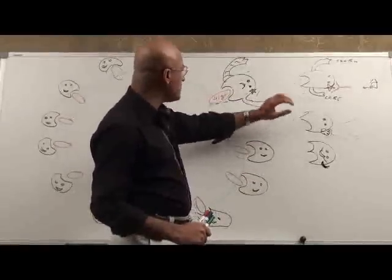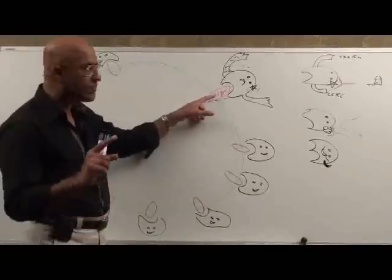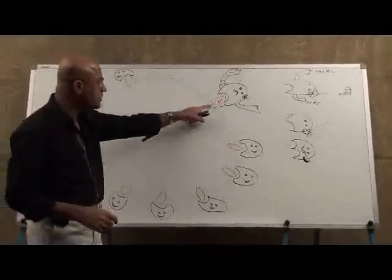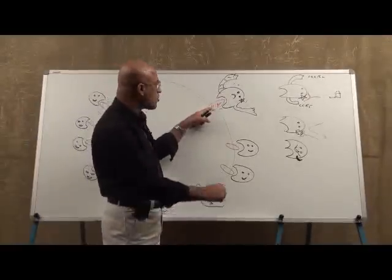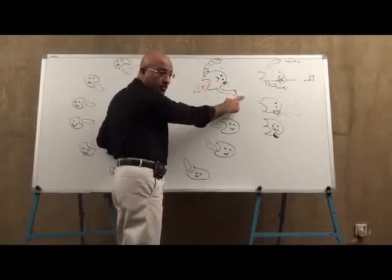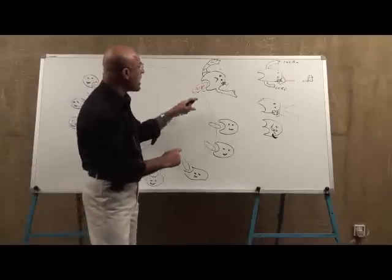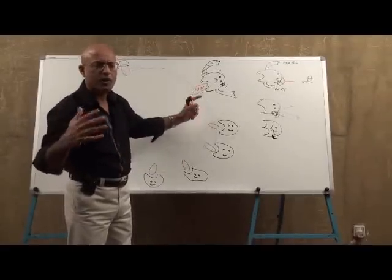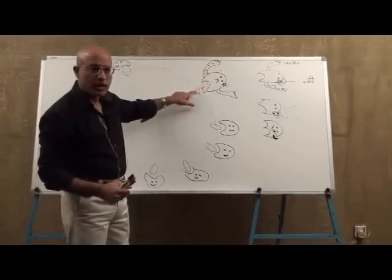We have talked enough about GP120. Now, the function of GP41: once GP120 attaches with the primary receptor CD4 and the secondary co-receptor, GP41 undergoes a change and helps the virus envelope fuse with the target cell membrane. So GP41 is the fusion molecule.